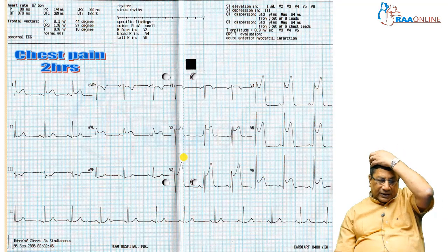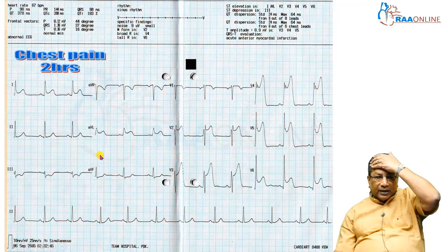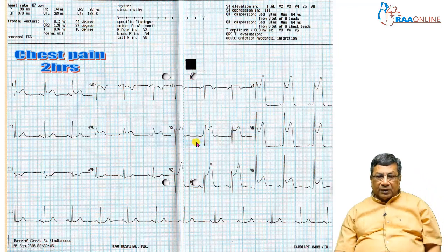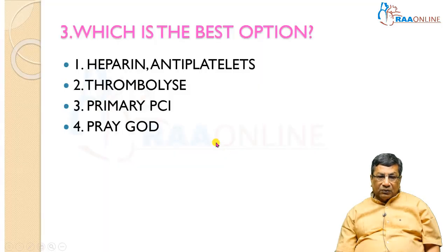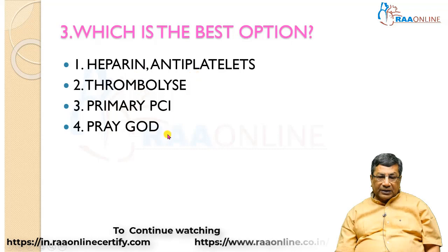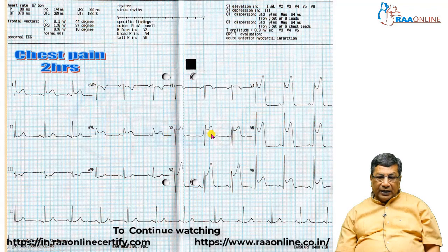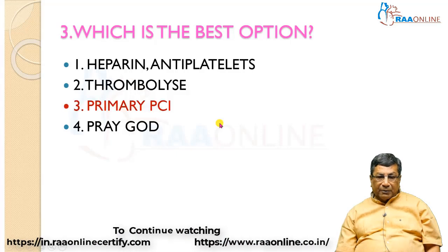Showing another patient with two hours of chest pain and ST elevation in V2, V3, V4, and all lateral leads — suggesting total occlusion of the LAD plus LCX, or a left main occlusion. The question is: which is the best option — thrombolysis, PCI, heparin, or antiplatelets? The best option in any ST elevation MI is primary PCI — there is no doubt about this.